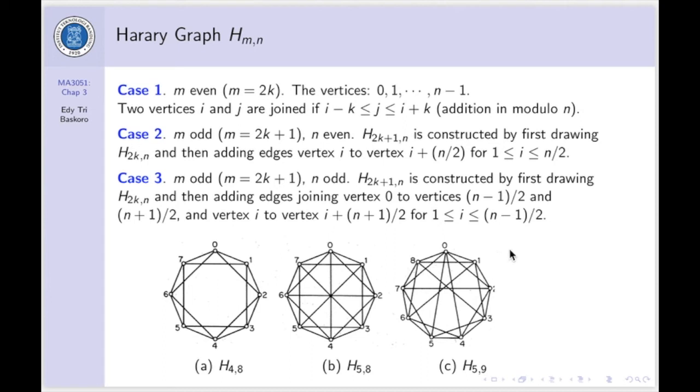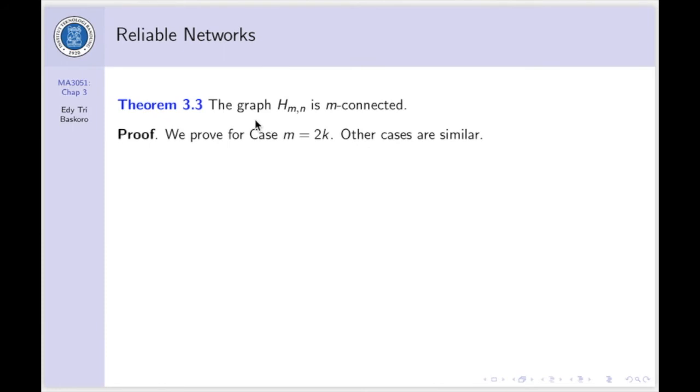This graph will be N vertices, and then in each case will be M-connected graph. We will show this kind of nice property in the following theorem. The Harary graph H_M,N is M-connected.